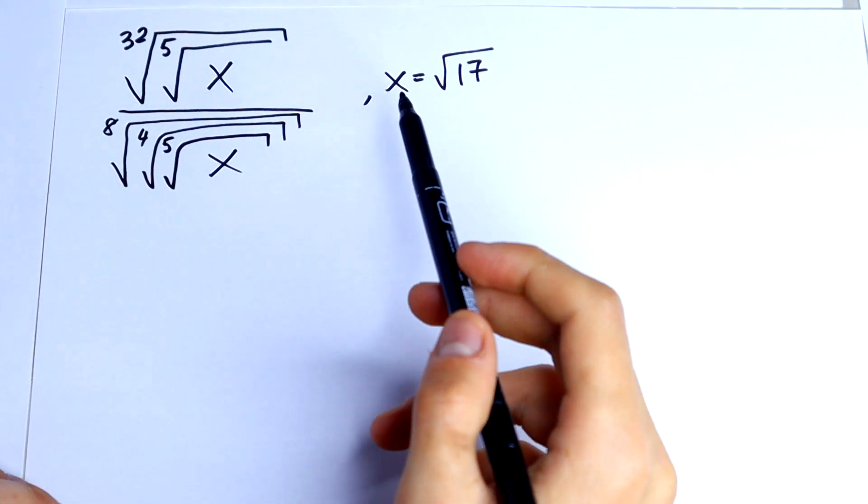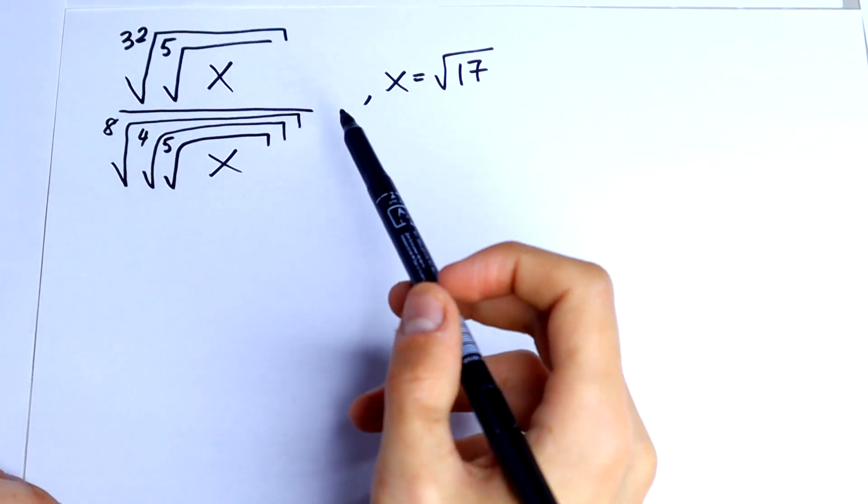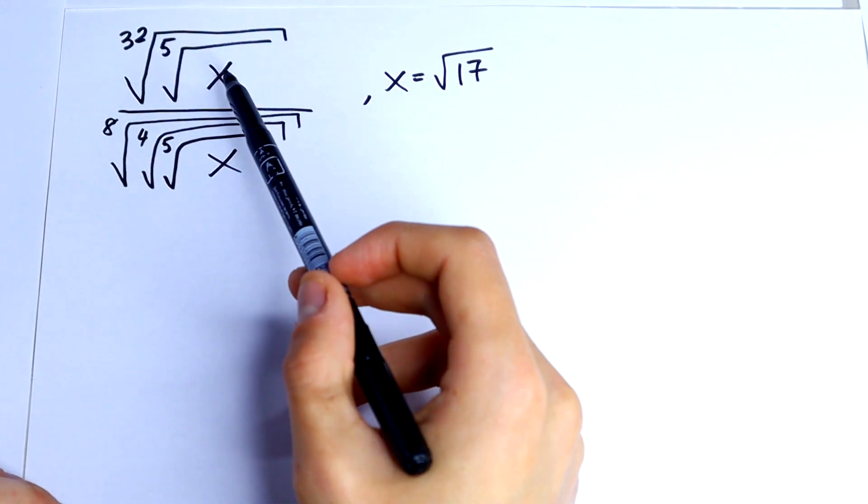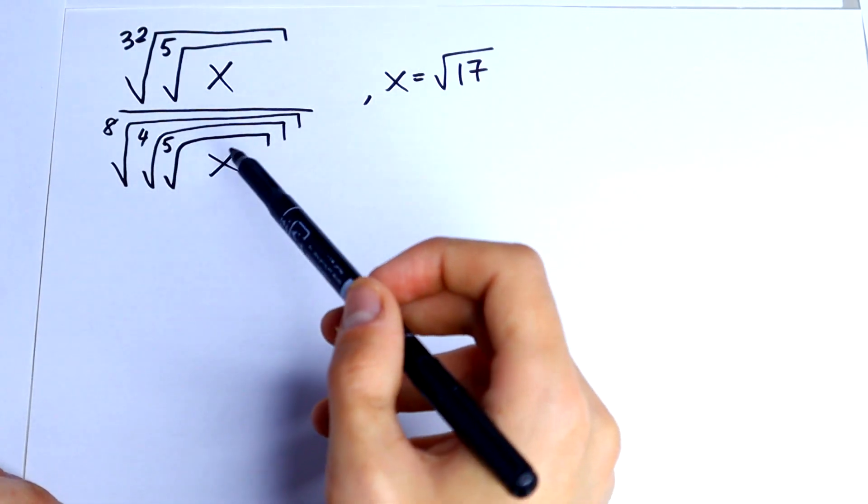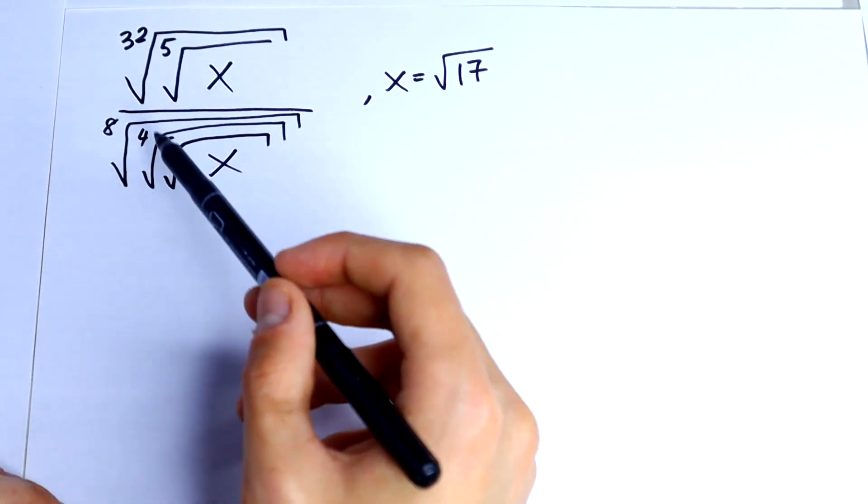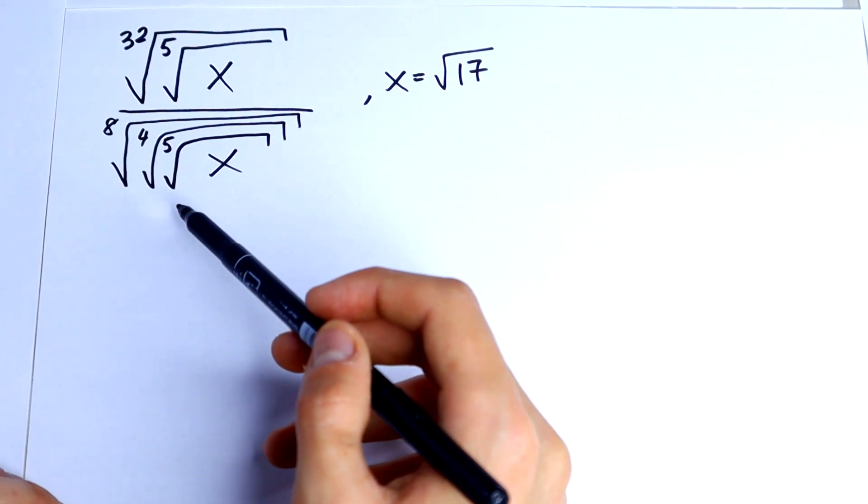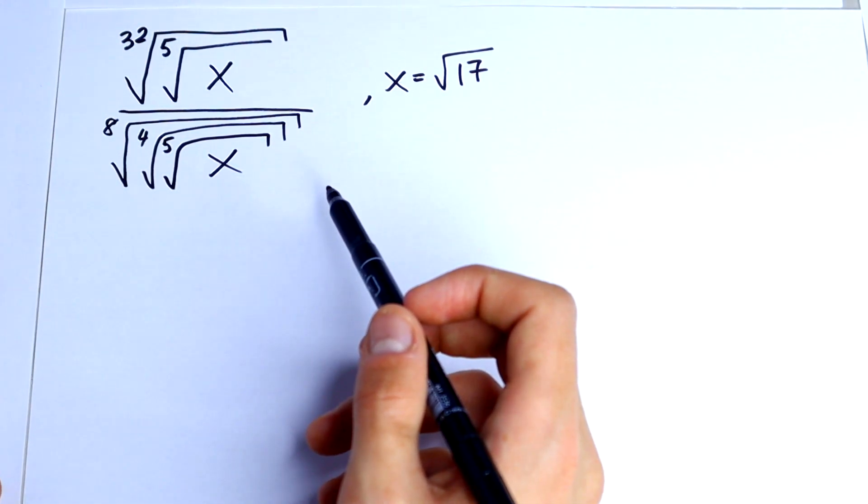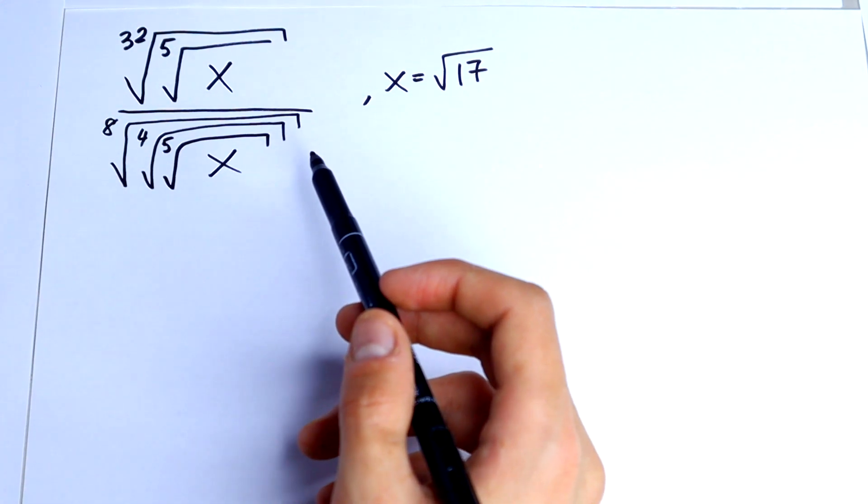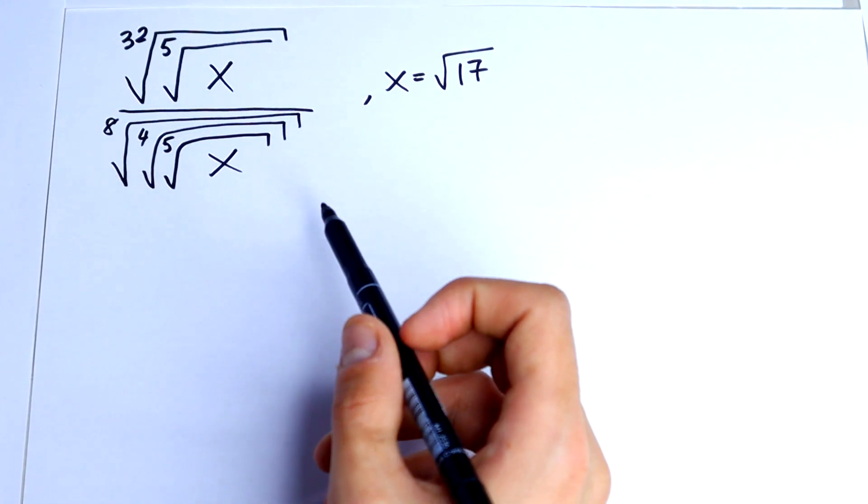On the first side it's really scary roots, because we have x under 2 roots, 5 and 32 power, and on the bottom x under 3 roots, 5, 4 and 8 power. But this task, this question is very simple.